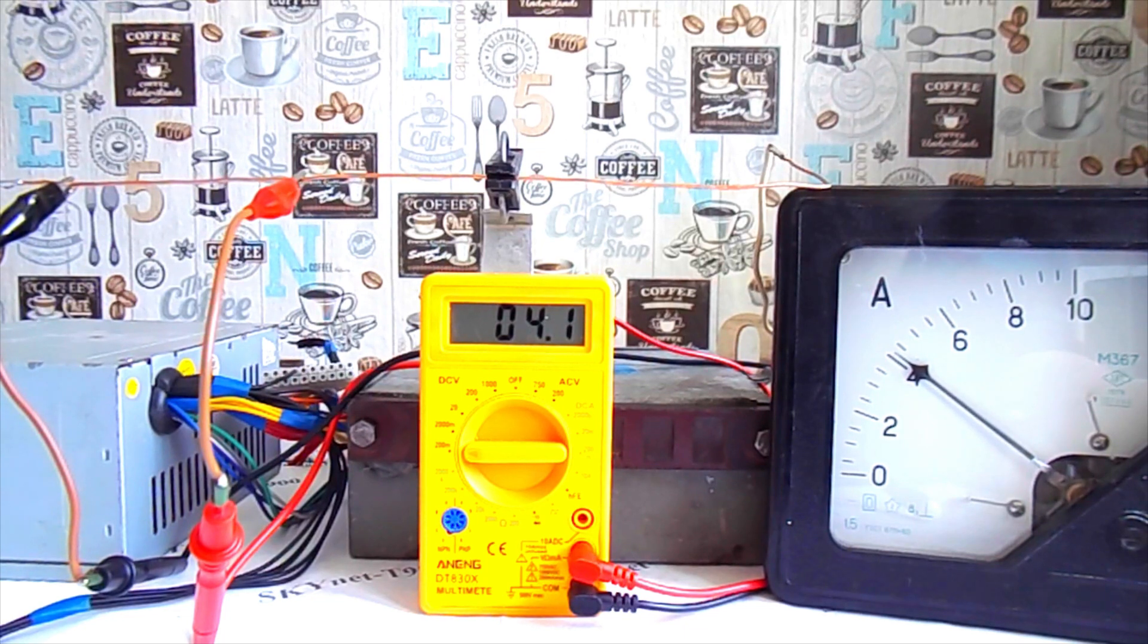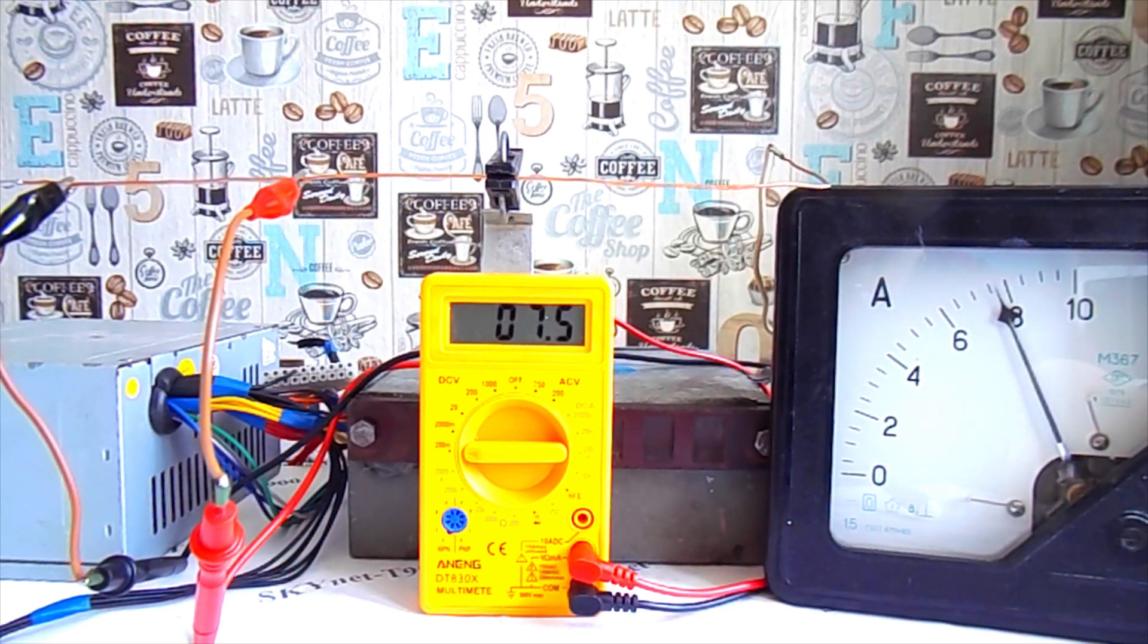If the load is made larger, then the voltage drop will increase in direct proportion. With a current of 6 amperes, the drop is 6 millivolts, 6.5, then 7, 8 amps.